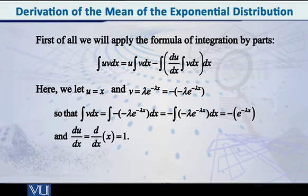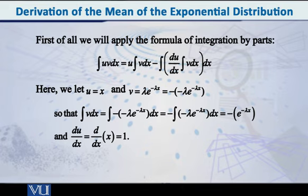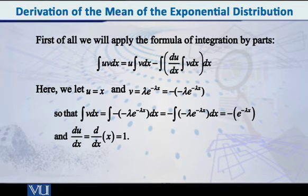Let us apply this here. We have x times lambda*e^(-lambda*x). I will select x as the first function, so let u = x. The rest is the second function, so let v = lambda * e^(-lambda*x), which can also be written as minus of (-lambda * e^(-lambda*x)). I have done this because when we take the integral of v, the coefficient (-lambda) is exactly what we require.